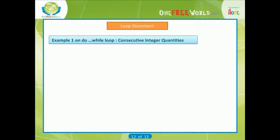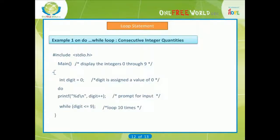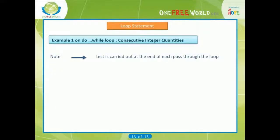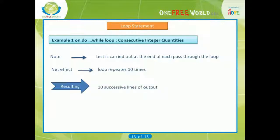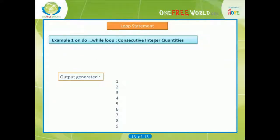Example 1 on do-while loop: consecutive integer quantities. Here is another program to do the same thing using the do-while statement in place of the while statement. Note that the test is carried out at the end of each pass through the loop. The net effect is that the loop will be repeated 10 times, resulting in 10 successive lines of output. Each line will appear exactly as shown in the previous example.